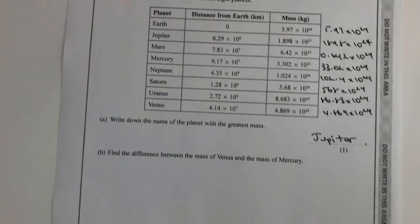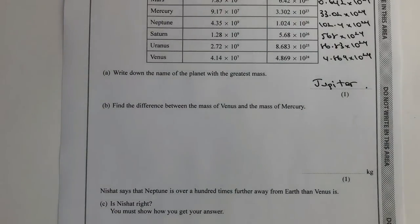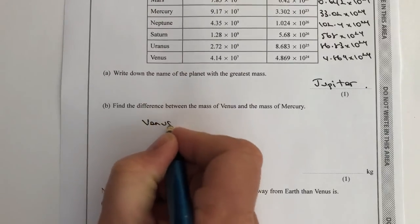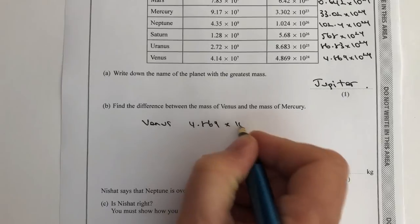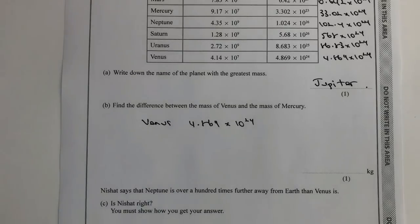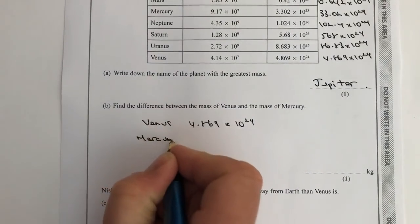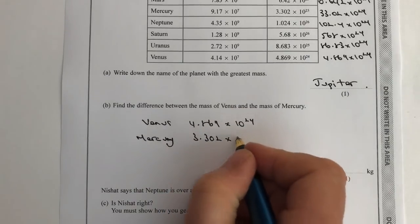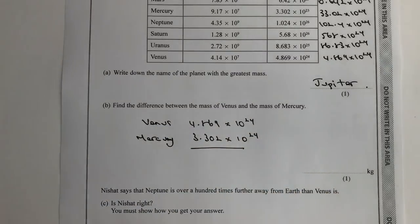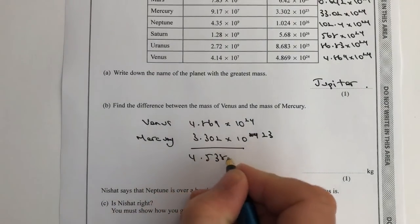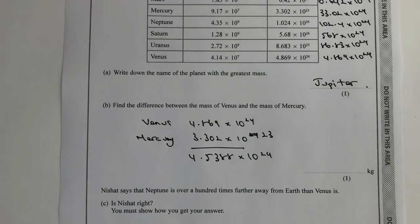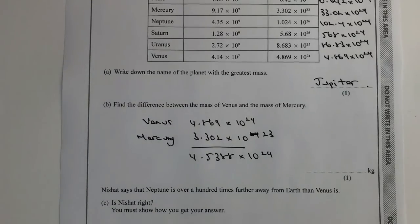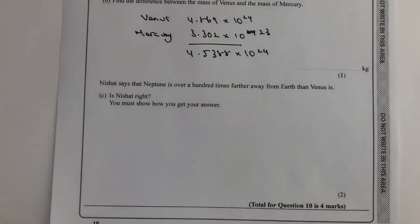Now it says find the difference between the mass of Venus and the mass of Mercury. Because you've got a calculator you can just plug this straight in. Venus has a mass of 4.869 times 10 to the 24, and we take Mercury away - Mercury has a mass of 3.302 times 10 to the 23. Take one away from the other and you'll end up with 4.5388 times 10 to the 24.